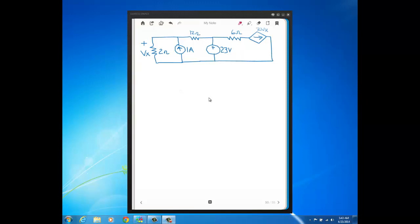In this video, we're going to solve another problem using node voltage method. This circuit has several different sources: a voltage source, a current source, and a dependent current source.